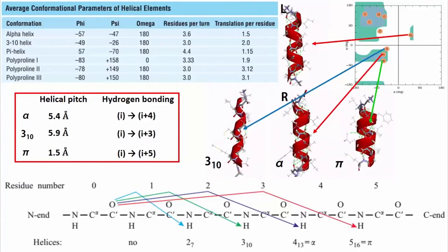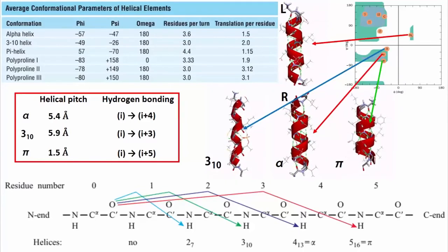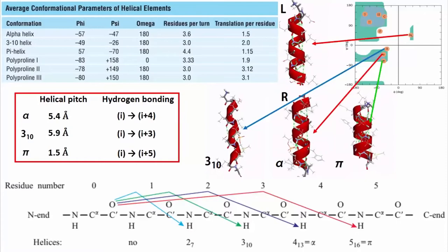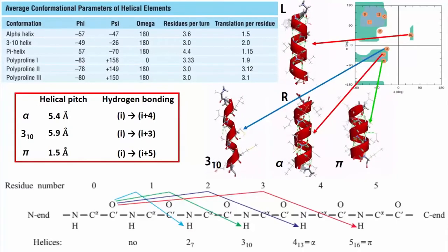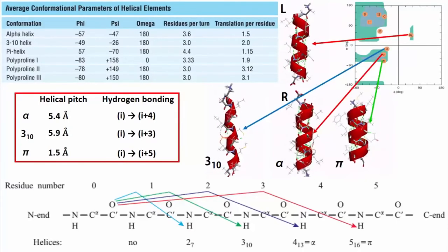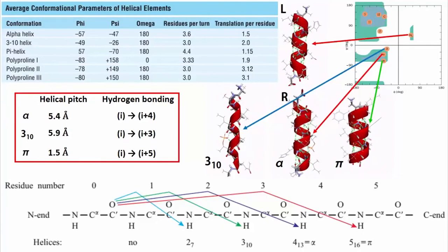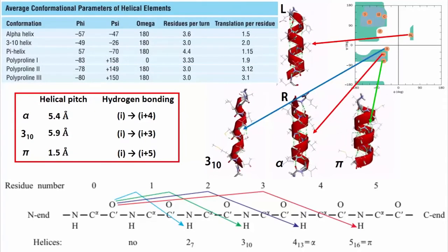Well, alpha helix is not the only type of helix observed in protein crystal structures. In fact, there are four major types of helices: right and left-handed alpha helix, 310 helix and pi helix.